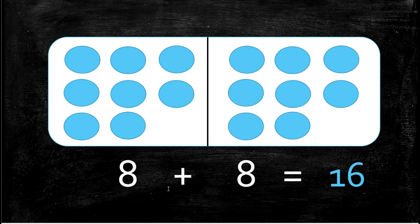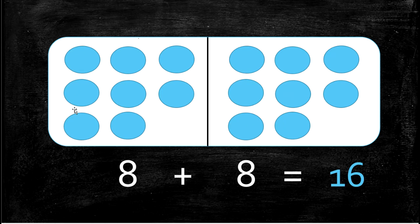The next double is 8 plus 8 equals 16. We have 1, 2, 3, 4, 5, 6, 7, 8 plus 8 here — counting all together: 1 through 16. We have 8 here plus 8 here gives us 16 all together. Say that with me: 8 plus 8 equals 16.